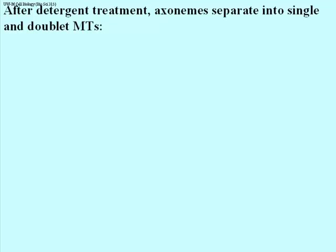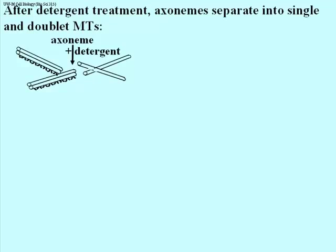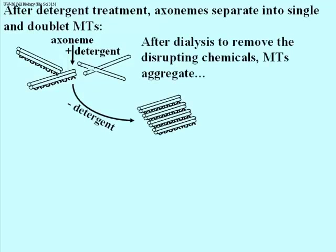Here we have axoneme treated with an appropriate detergent, broken apart — and what you see are the single microtubules derived from the middle component of the axoneme, and the doublets with their dynein arms illustrated. If you then dialyze this preparation to remove the detergents and chemicals that had disrupted the axoneme structure, the microtubules will re-aggregate — not into an axoneme, but into a sheet of doublets. The single microtubules don't have the capacity to associate because they have nothing that allows them to bind. The doublets, with their dynein arms accounting for sliding of one doublet against another, bind to one another to form this sheet.